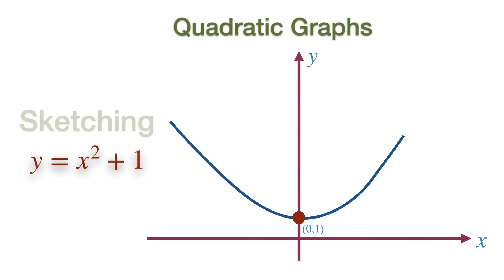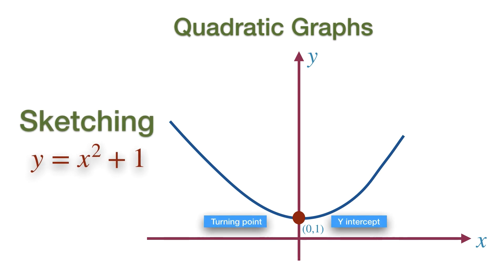However, when you are asked to sketch the graph, it means you need to only show the important points in the graph and its general shape. Important points on this graph are the turning point, the Y-intercept, and the parabolic curve. The turning point coincides with the Y-intercept on this occasion, and a sketch will be a simple parabolic curve passing through the point (0, 1).